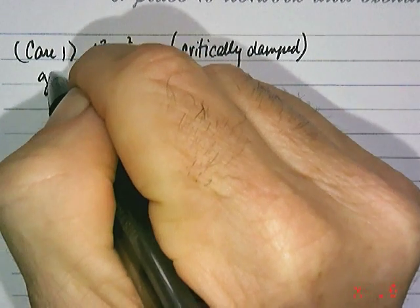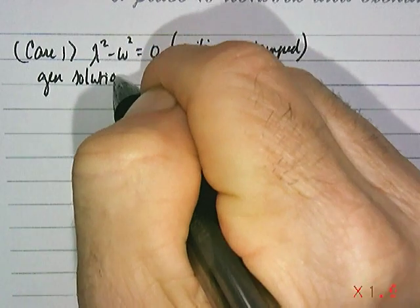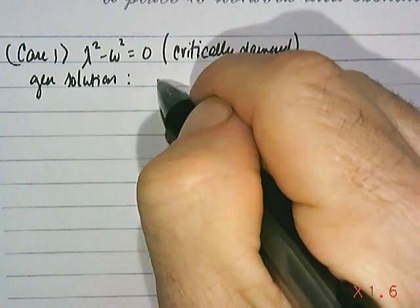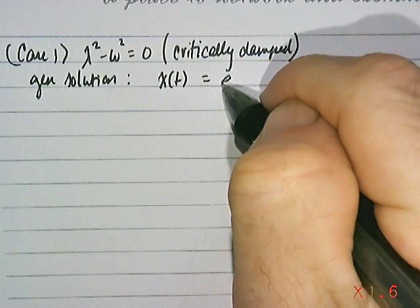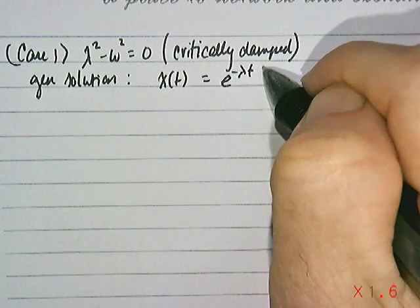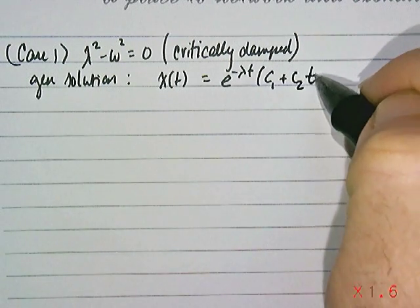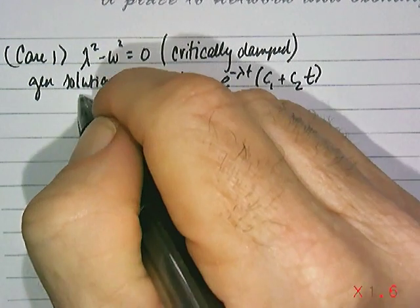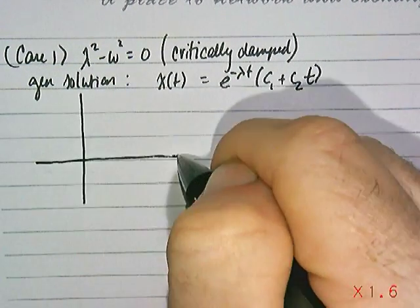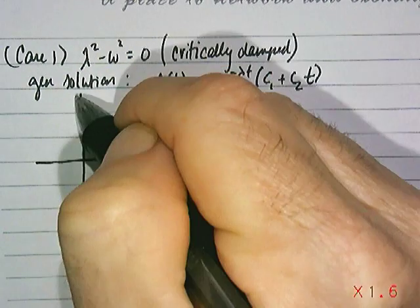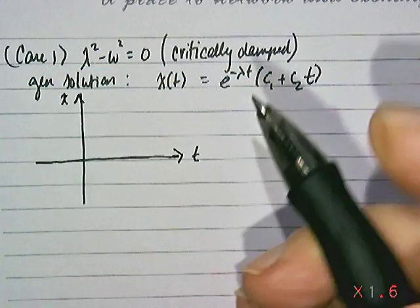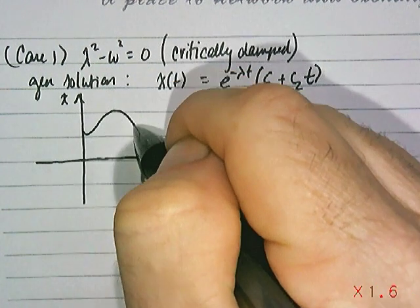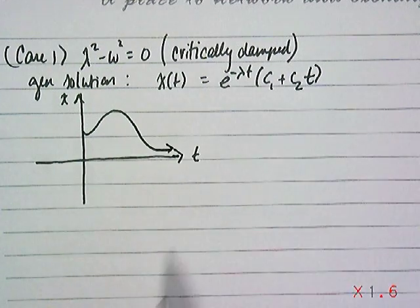In that case, the general solution for the displacement from solving that second order equation when you have a double root is x(t) = e^(-λt)(c₁ + c₂t), because we know that extra t term comes in. If you were to draw a general description of what the system might do through time, it would start oscillating and then perhaps eventually settle down and stop.